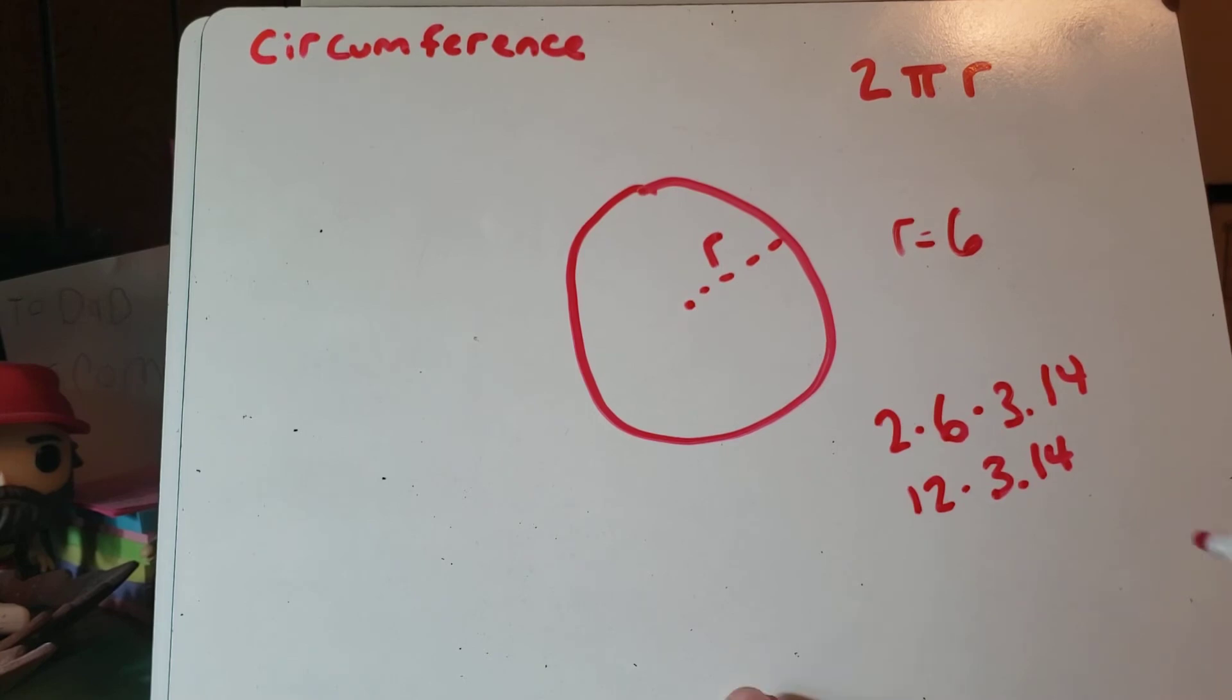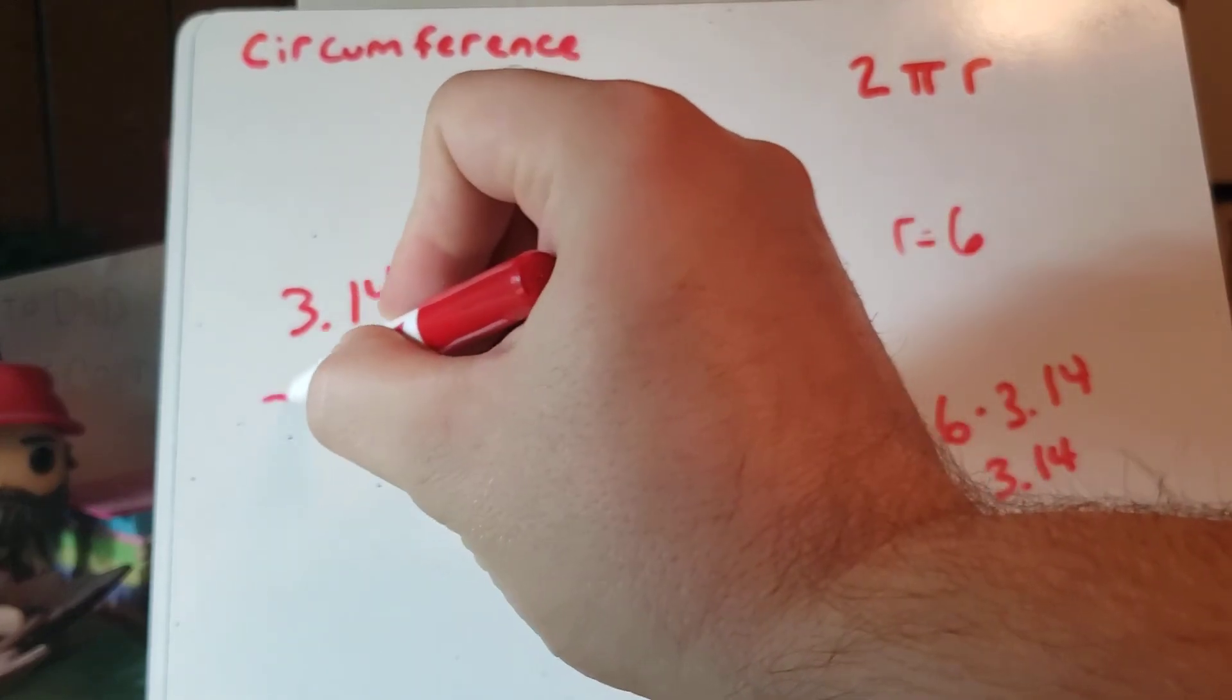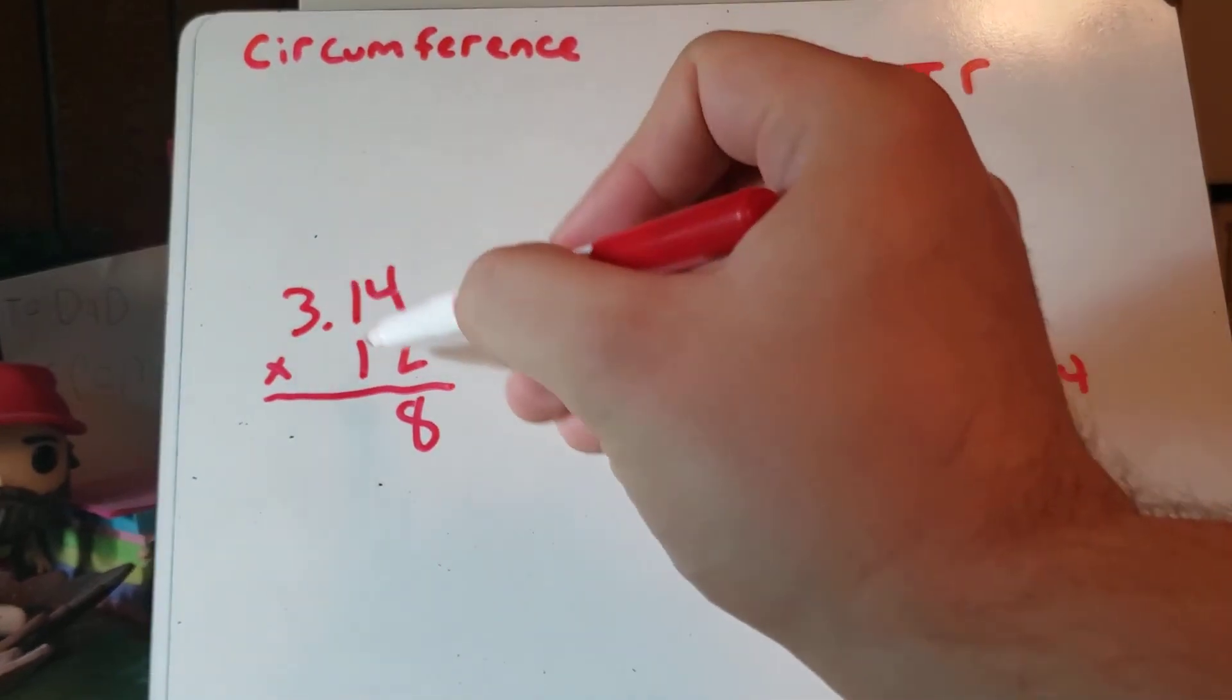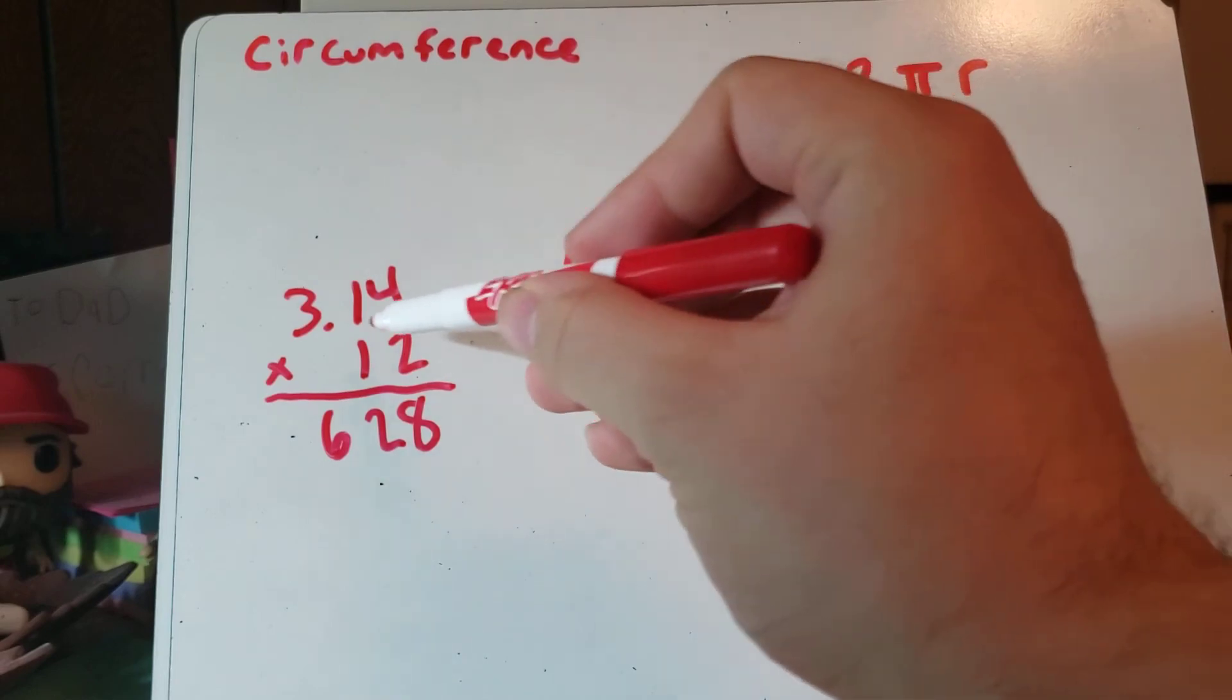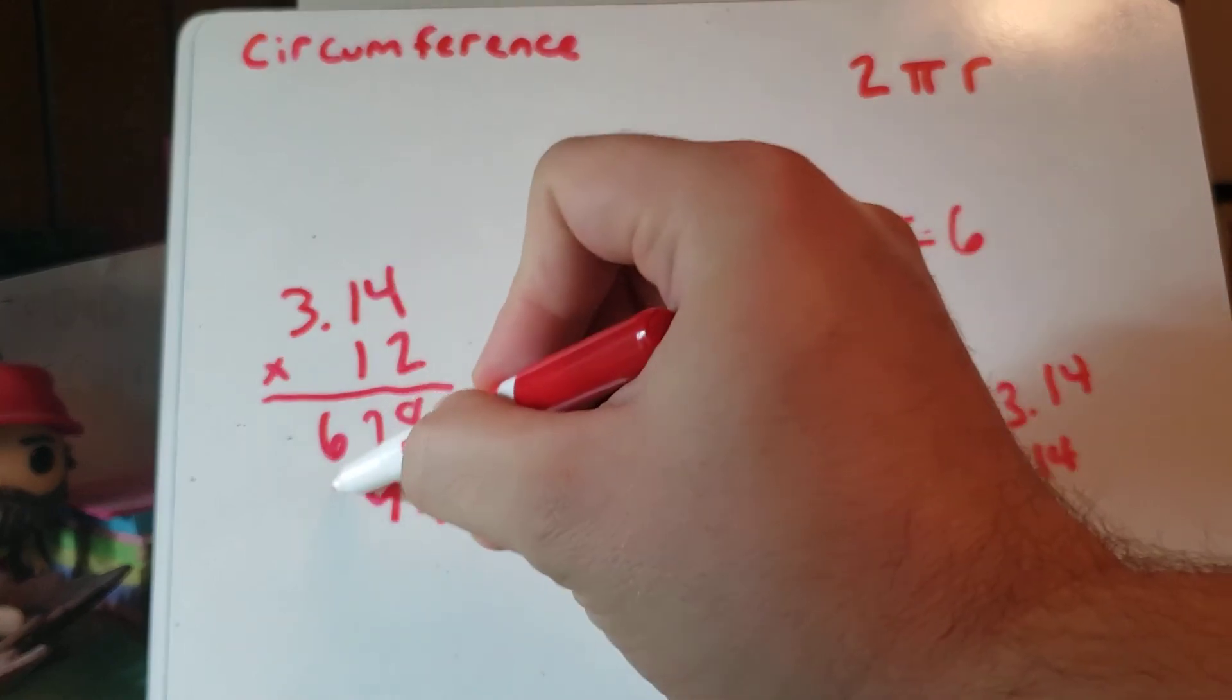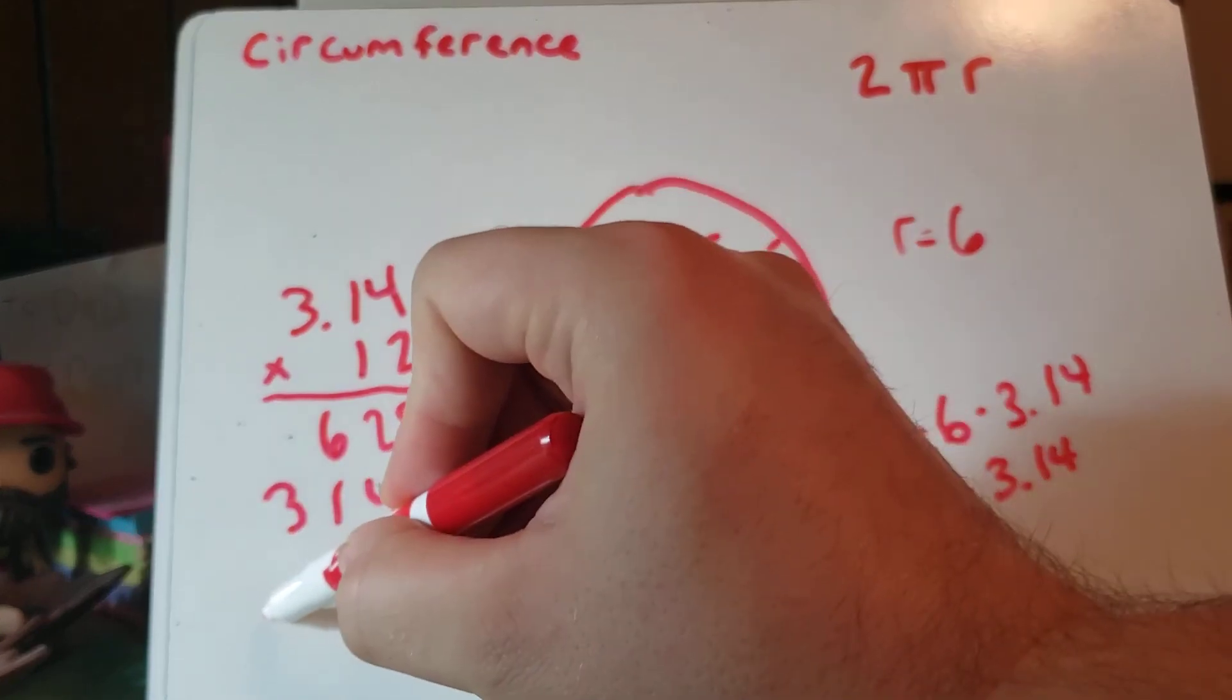So let's do that over here. We've got 3.14. We're going to multiply by 12. 2 times 4 is 8. 2 times 1 is 2. 2 times 3 is 6. 1 times 4. Oh, hold on. That part's empty. There we go. 4. 1 times 1. 1 times 3. And there's two decimal places, so we'll put the decimal in the center here with the two spots.